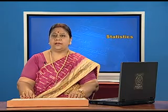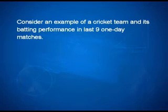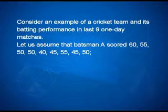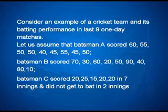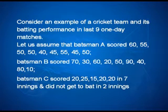Consider an example of a cricket team and its batting performance in the last 9 day matches. Batsman A scored 60, 55, 50, 50, 40, 45, 55, 45, and 50 runs. Batsman B scored 70, 30, 60, 20, 50, 90, 40, 80, and 10 runs. Batsman C scored 20, 25, 15, 20, 20 in 7 innings and did not get to bat in 2 innings.